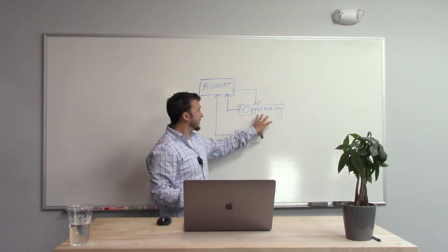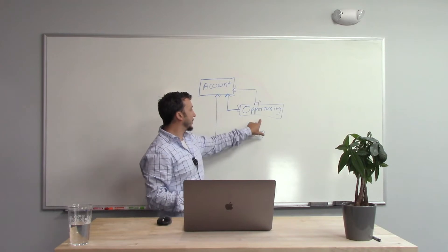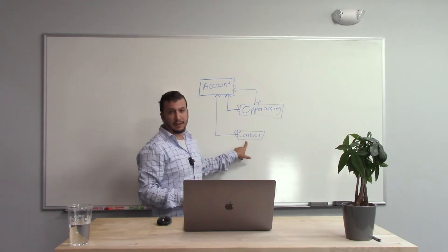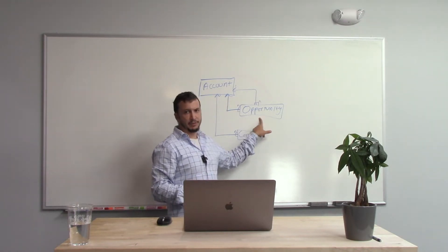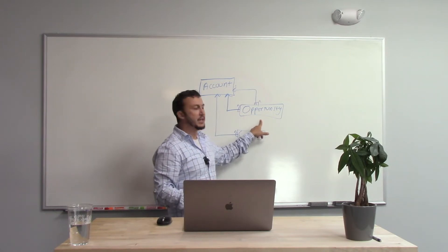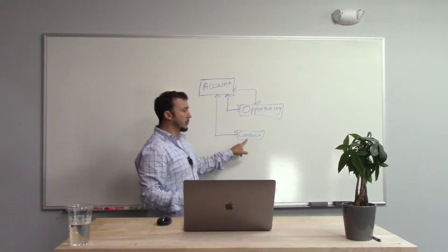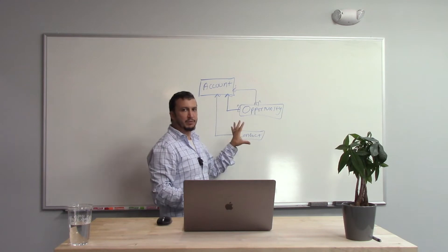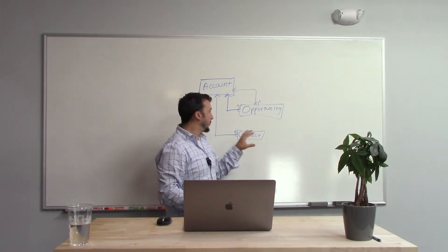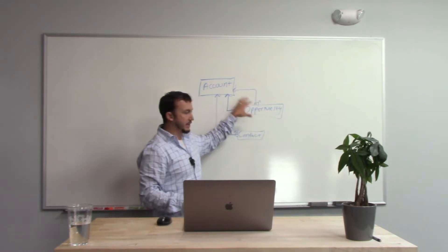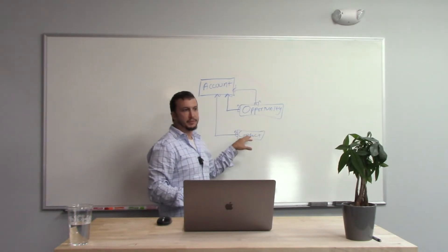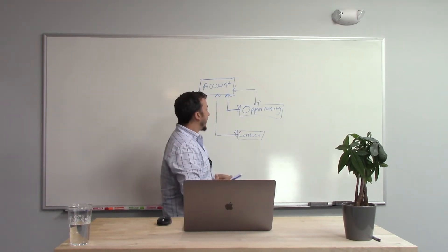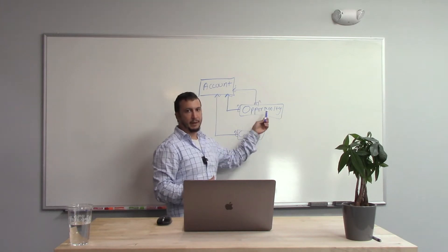The big thing Salesforce provides out of the box is when we want to relate opportunities to contacts. Let's say at this account we have 10,000 contacts, but on any given opportunity we're only dealing with two, three, or four people at a time. We don't want to have to say, who are all the people that work for this company, and which ones am I dealing with on this opportunity? If we have many opportunities over time, we may have different people working on those deals. That creates a many-to-many relationship between opportunities and contacts.